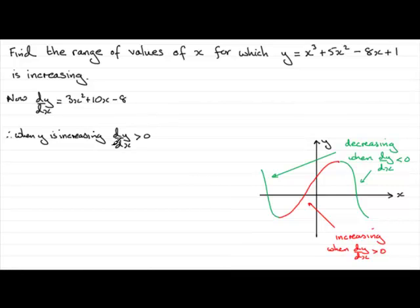Now that we've got dy/dx is greater than zero, and dy/dx is 3x squared plus 10x minus 8, we can say that therefore 3x squared plus 10x minus 8, in this case, is greater than zero. Now what we have here is a quadratic inequality. And to solve quadratic inequalities, you need to factorise them first.